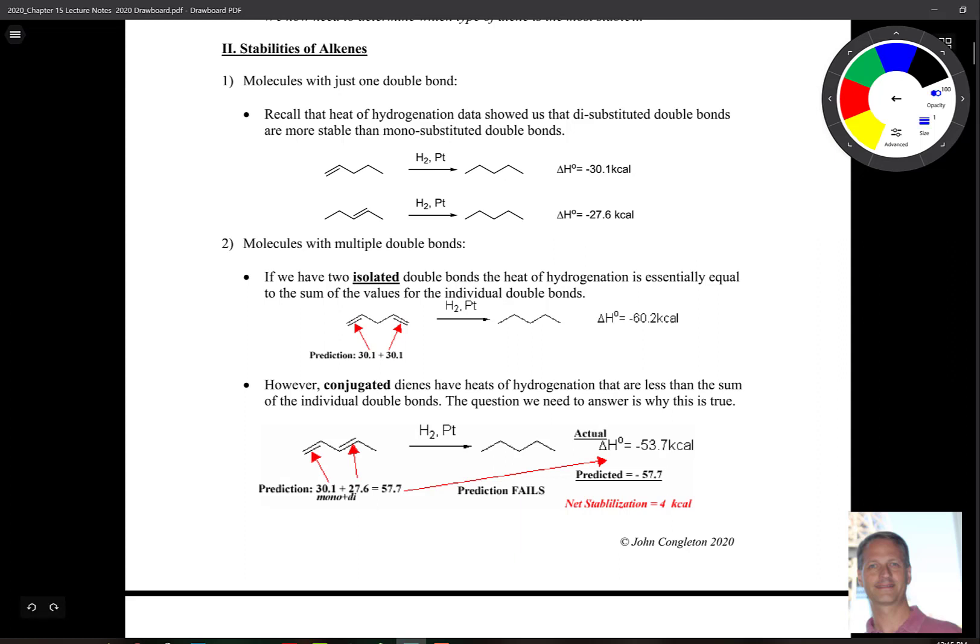So if you take this alkene that's at the end of the molecule and add some H2 and platinum or palladium or something like that, you end up getting a carbon double bond that's been eliminated and added across it is two additional atoms of hydrogen. So your CH, CH2 has turned into a CH2CH3. So the delta H for that is negative 30.1 kcals per mole.